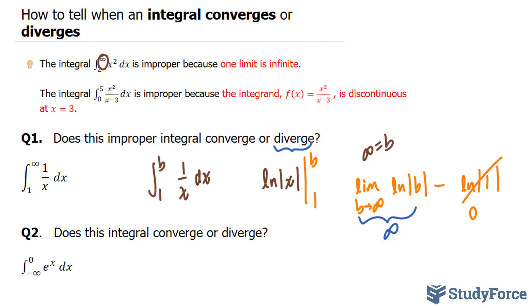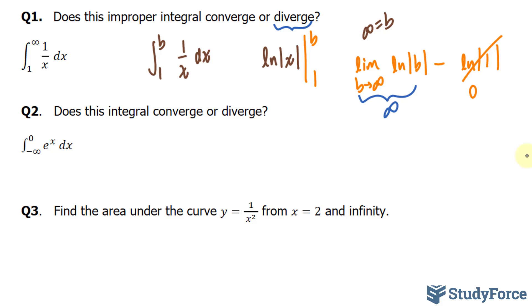Let me show you another example. Does this integral converge or diverge? Once again, we have our lower bound containing negative infinity. I'm going to switch that with an arbitrary letter and I can choose any letter I like. I'm going to choose a.